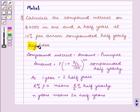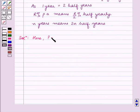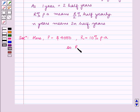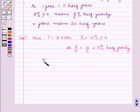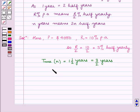With this key idea, let us proceed with the solution. According to the question, we need to calculate the compound interest on $4,000 in one and a half years at 10% per annum compounded half yearly. So here principal P is equal to $4,000, rate of interest r is equal to 10% per annum, so r by 2 is equal to 5% half yearly. And time n is equal to 1 and a half years, which is equal to 3 by 2 years, so 2 into 3 by 2 is equal to 3 half years.